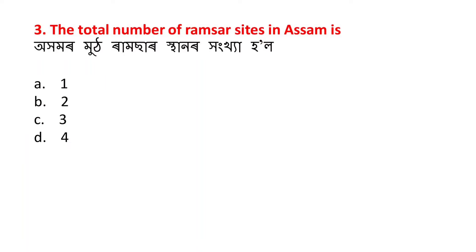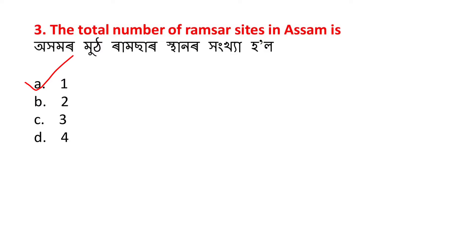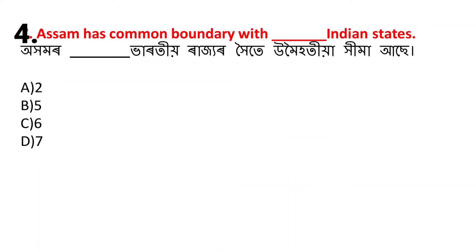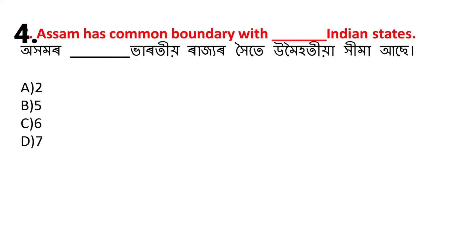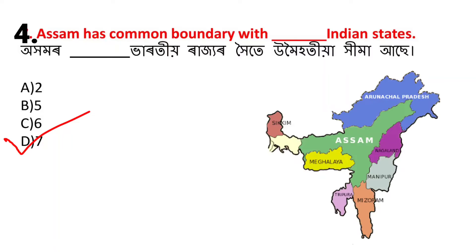B number to hudhahattro. The total number of Ramsar sites in Assam - ahamor mod ramsar shthanor hoiinkhah hoi se. The answer options include Mizoram, Tripura, Meghalaya, and West Bengal.